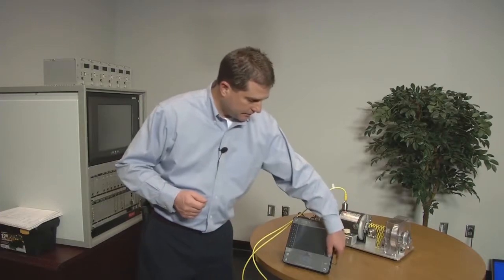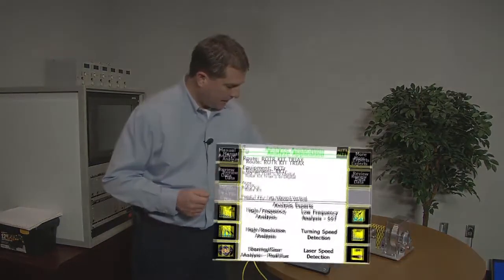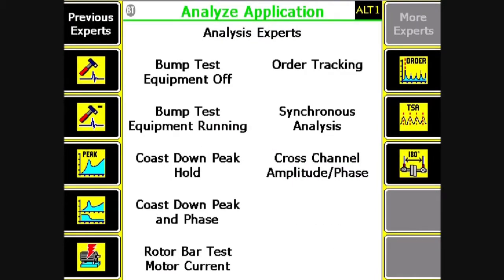So what I'm going to do is come over and press F12 to run analyze, and I come into the analyze application. I'm going to press F7 for more experts, and then F3 is bump test equipment running.